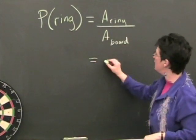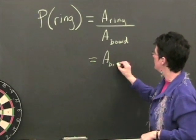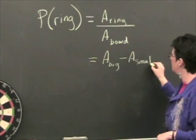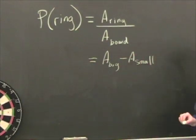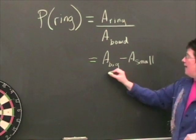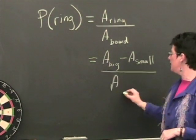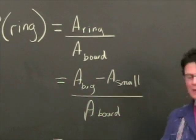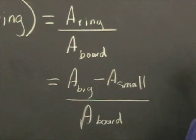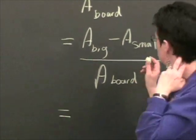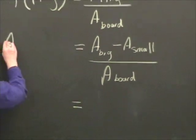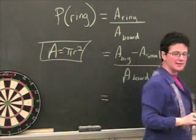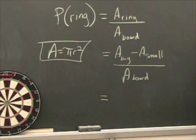Okay. So let's see if we can write that down. Okay. To find the ring, we're going to have the area of the big circle minus the area of the small circle. And what you will be left with is the ring. And then all of that will be compared to the area of the board. Oh, does anybody remember the formula for the area of a circle? Pi r squared. Right. Okay. That's going to be, like, super important. So let's put this over here. Area is equal to pi times radius squared.